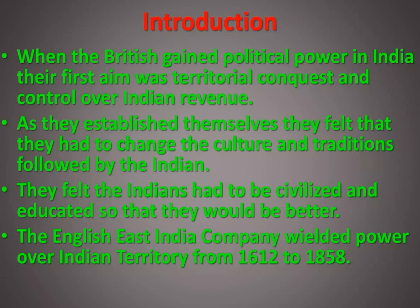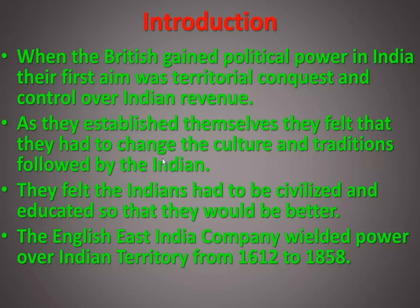Welcome to my channel. Today we will be learning chapter number seven of history: 'Civilizing the Native and Educating the Nation.' When the British gained political power in India, their first aim was territorial conquest. They wanted to control the territory, the land, and then control Indian revenue. As they established themselves, they felt they had to change the culture and tradition followed by Indians — they felt the Indians had to be civilized and educated.